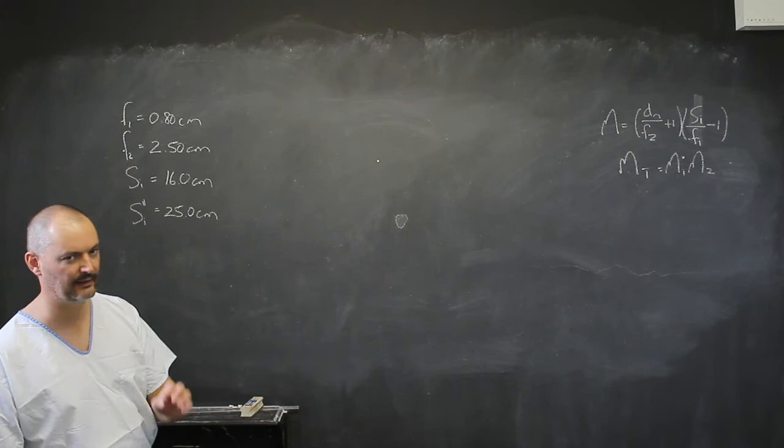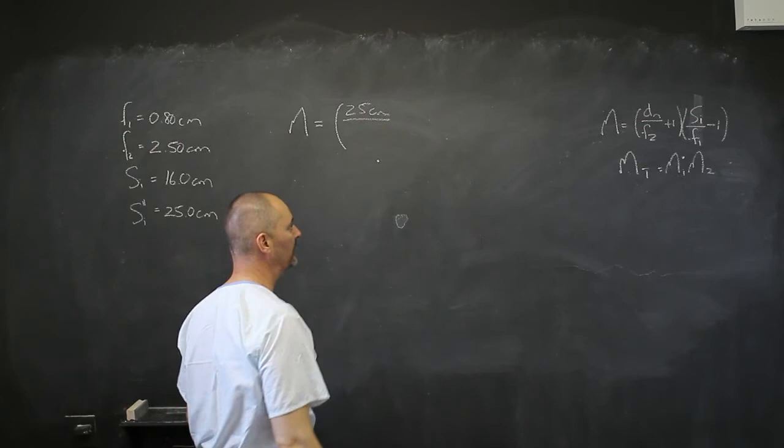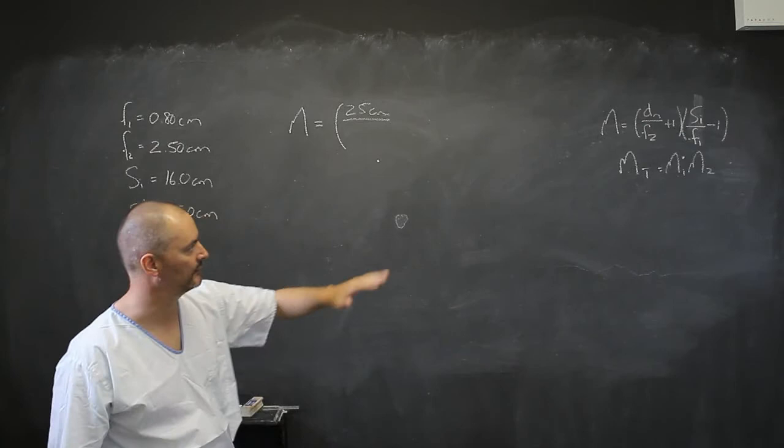Okay, so we're going to have magnification is going to equal, DN is this 25 centimeters, so I'm going to put a negative there, even though it's going to be on the other side of the lens. DN is near point, it's 25.